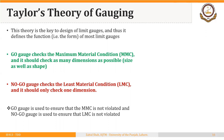Taylor's theory states that the go gauge checks the maximum material condition and it should check as many dimensions as possible, for example size as well as shape. A no-go gauge checks the least material condition and it should check only one dimension. The go gauge ensures that MMC is not violated and the no-go gauge ensures that LMC is not violated.